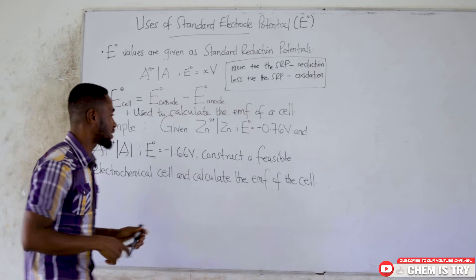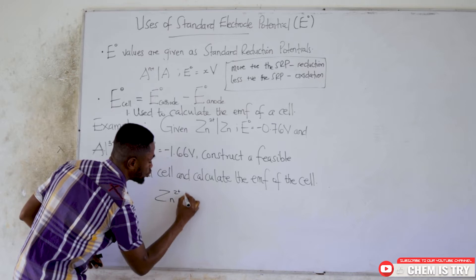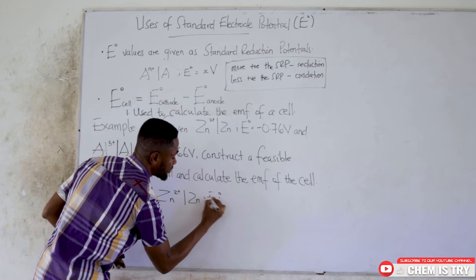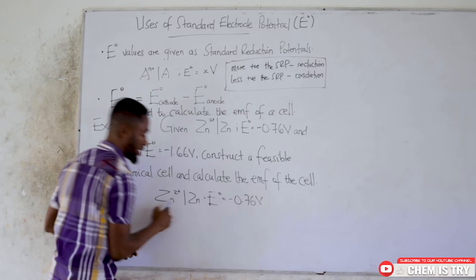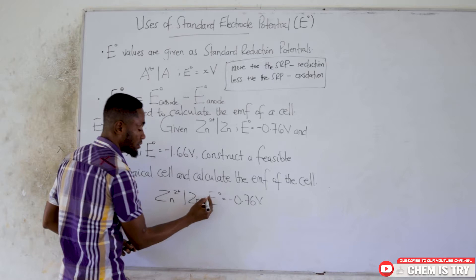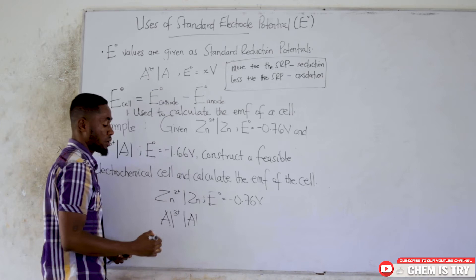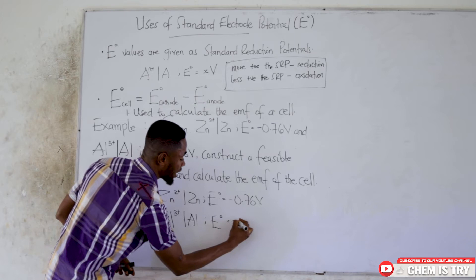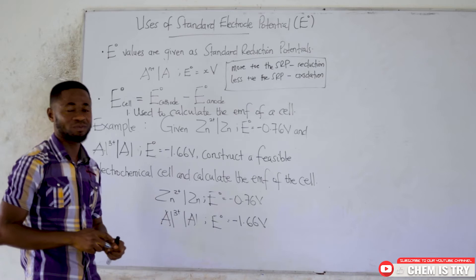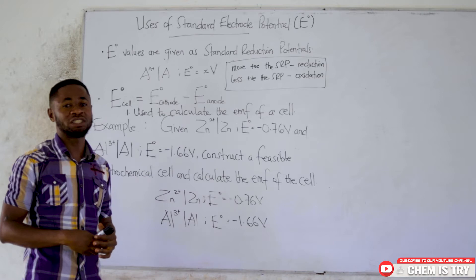The first half cell is the zinc half cell, which has a standard reduction potential value of negative 0.76 volts. Then we also have the aluminium half cell, which has a standard reduction potential value of negative 1.66 volts. From this information we can identify which one undergoes oxidation and which one undergoes reduction.